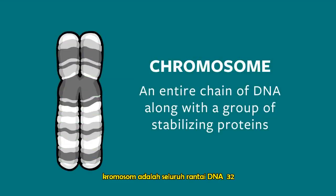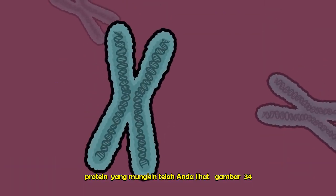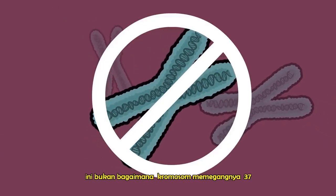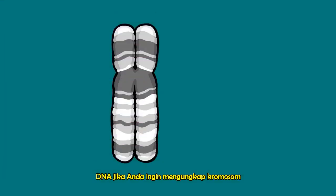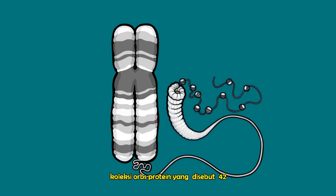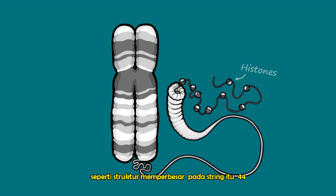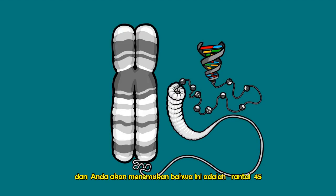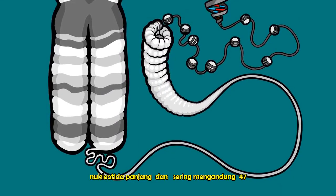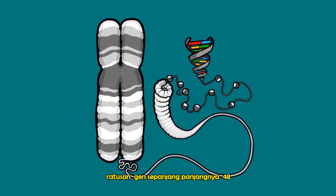A chromosome is an entire chain of DNA along with a group of stabilizing proteins. You may have seen images showing DNA trapped inside a chromosome, but this is not how chromosomes hold their DNA. If you were to unravel a chromosome, you would see that it's made of a thread, sort of like a spool of yarn. Zoom in, and you'll see a fiber made of protein orbs called histones, which are wrapped with a string-like structure. Zoom in on that string and you'll find the chain of DNA — it is extremely long, millions of nucleotides long, and often contains hundreds of genes along its length.